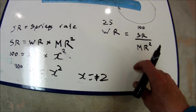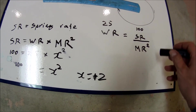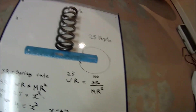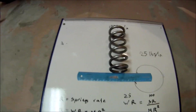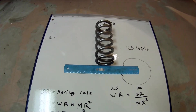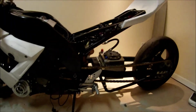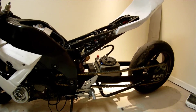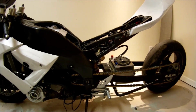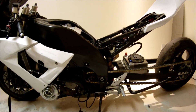That's how you can figure out motion ratio, spring rate, or wheel rate if you don't know one of the three. This is going to be it for this video — it's pretty short.